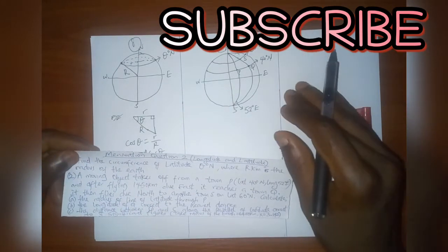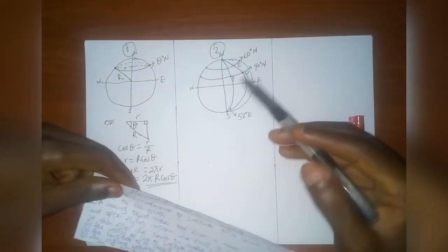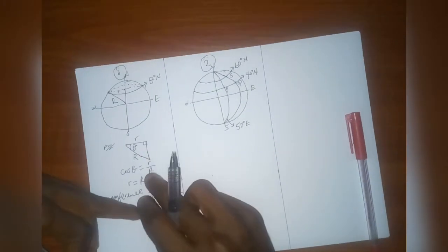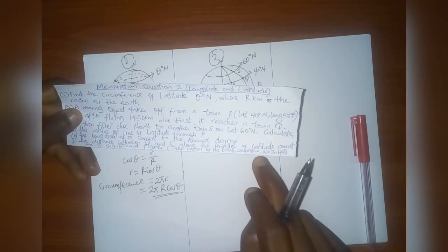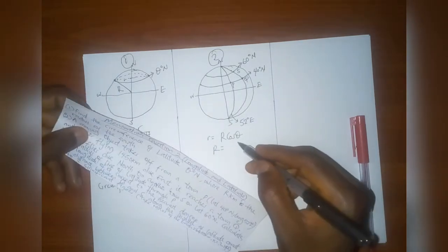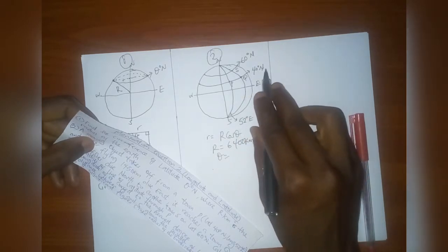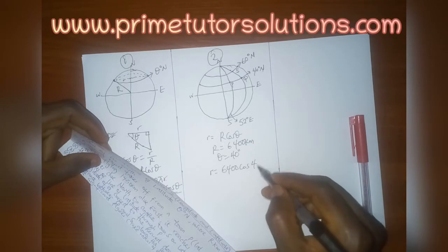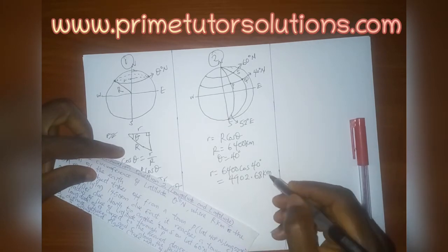First, we calculate the radius of the line of latitude through P, which is 40 degrees north. Using the formula radius = R·cos θ, with R = 6400 km and θ = 40 degrees, we get: radius = 6400 × cos 40° = 4902.68 kilometers. That is the radius for the first part.